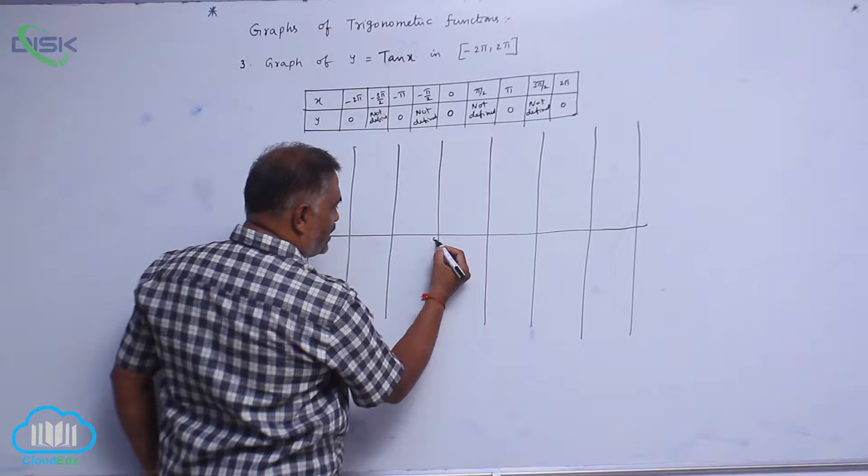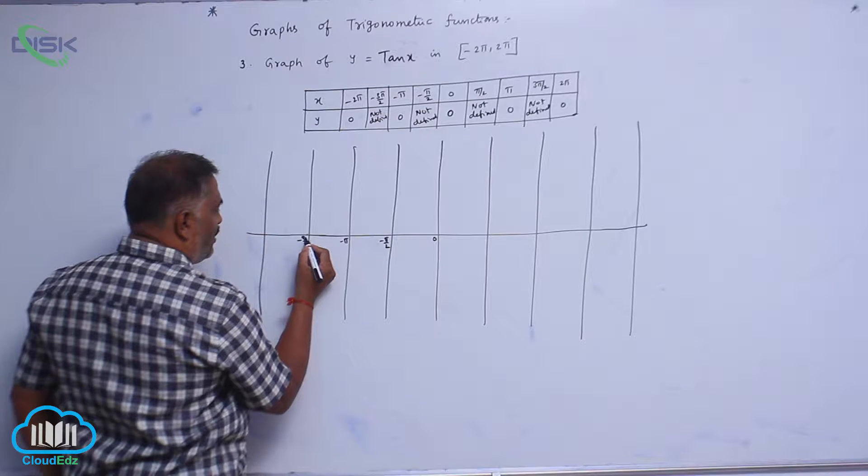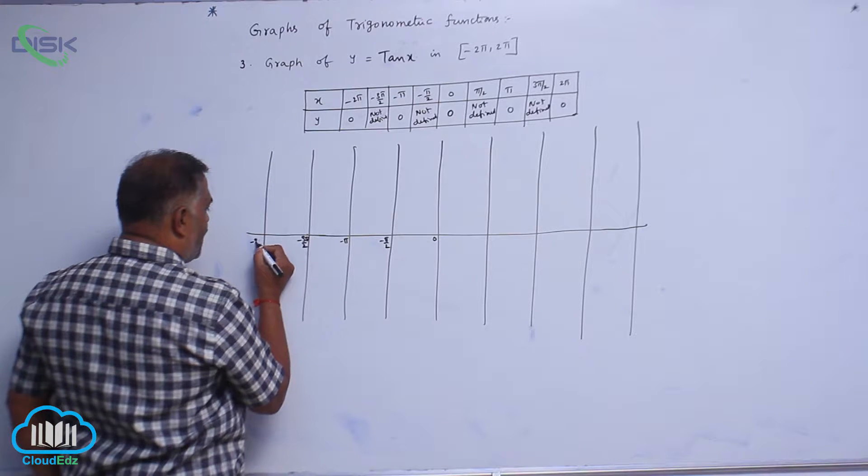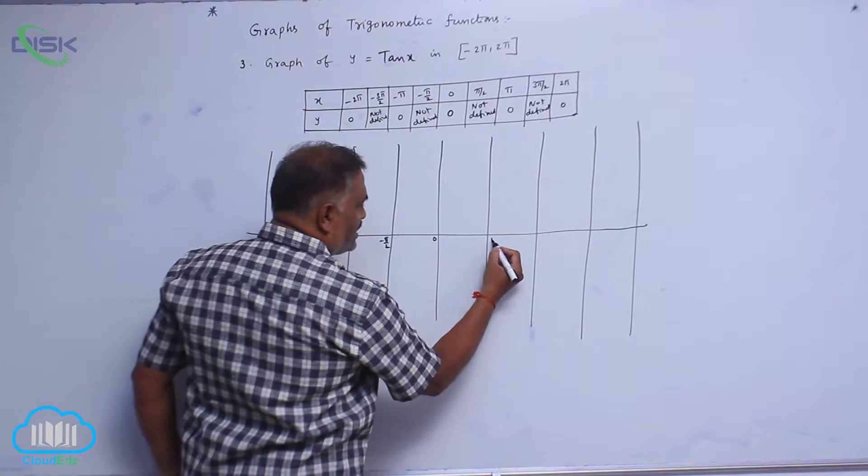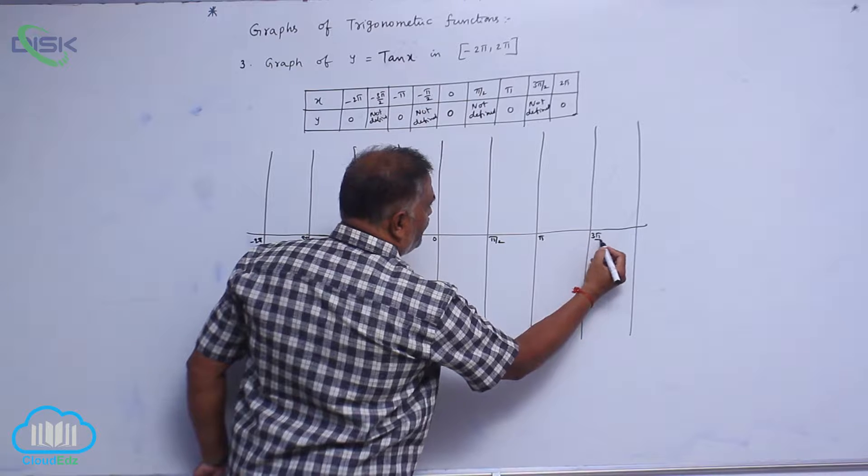Now, let us write 0, minus π by 2, minus π, minus 3π by 2, minus 2π. This is π by 2, π, 3π by 2, 2π.